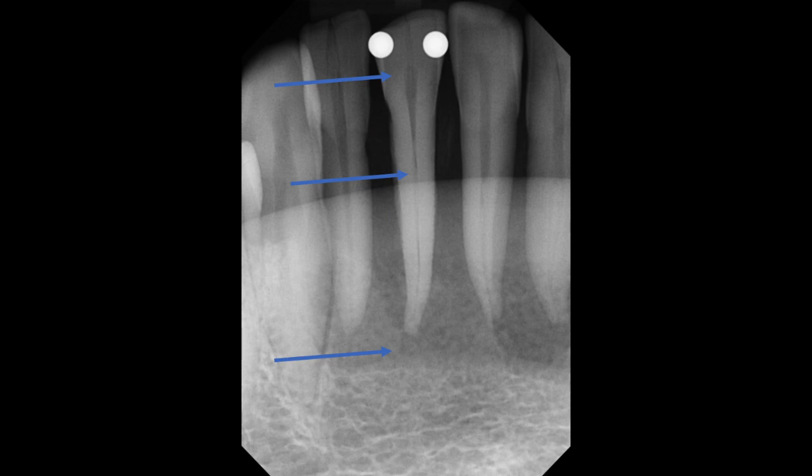We will break down three common situations in which a PA radiograph will fail to capture the root apex, although there are other possible scenarios. Without information of the apex, the clinician reviewing the radiograph will be unable to make a wholesome diagnosis.